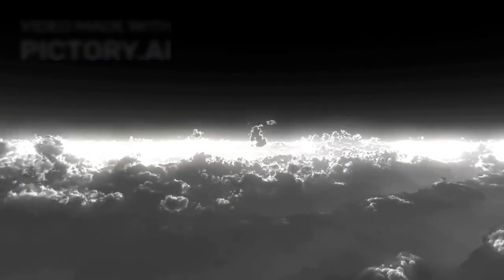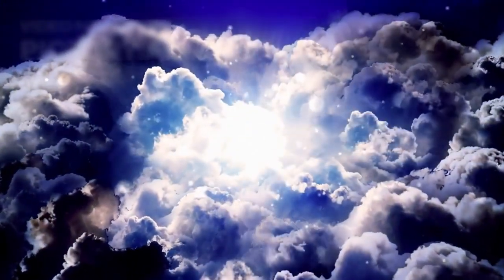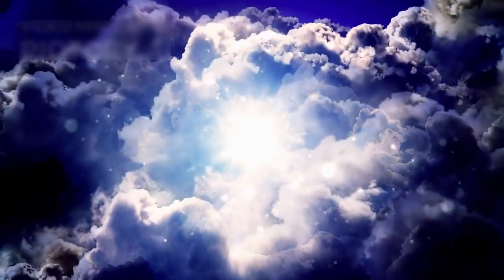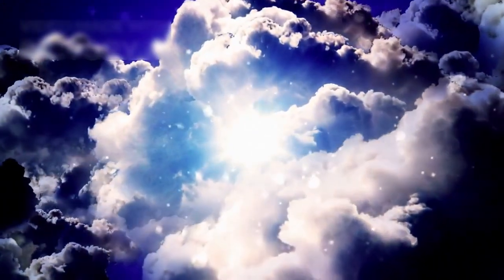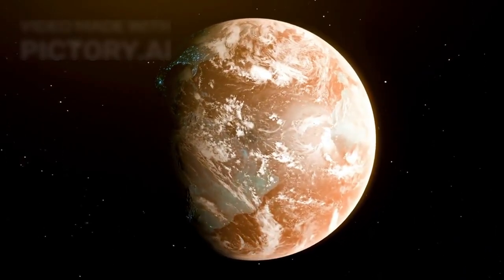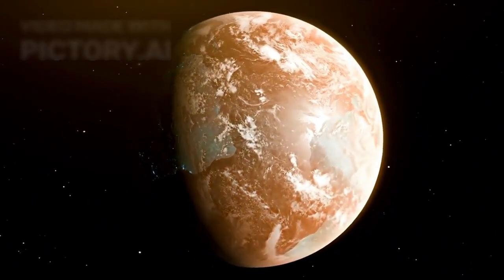This raises unsettling questions. How long has this atmospheric struggle gone on? Could Proxima b once have been more Earth-like, bathed in gentle light and thick with clouds? Or has it always been this stark, this exposed, this harshly illuminated?